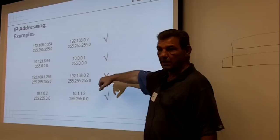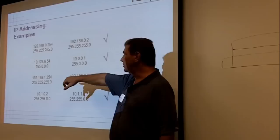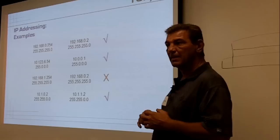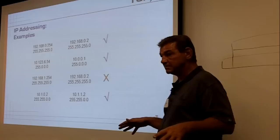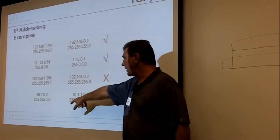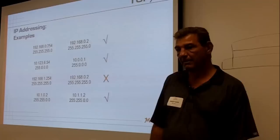In the first example, we're defining our network as the first three octets of the address. So 192.168.1 is a separate subnet than 192.168.0 — they can't talk to each other. The last example, 255.255, is telling us the first two octets define our network, and all the rest of the addresses can be used as hosts.